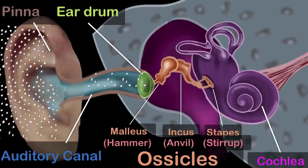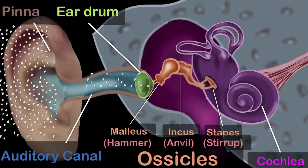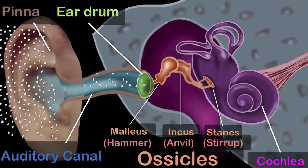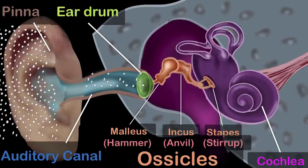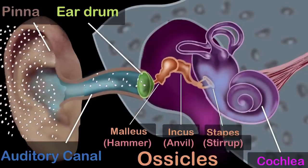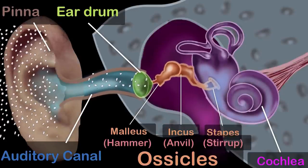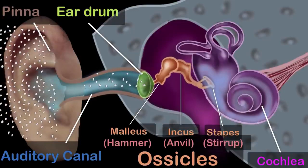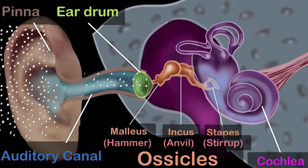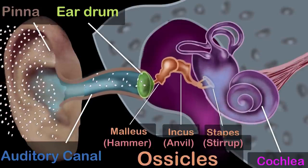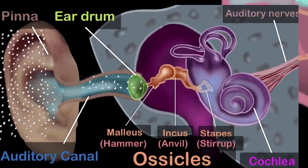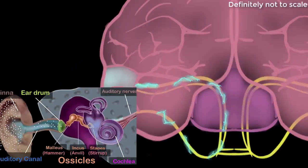Now the cochlea is super complex, and it's also a little mysterious — even today there are certain things about it we just don't know. As mentioned earlier, it contains a liquid, and when the stirrup hits our cochlea, this liquid starts vibrating. Then there are some specialized cells in the cochlea that convert these vibrations into electrical signals, and these electrical signals go through the auditory nerves all the way to your brain, where they get interpreted as sound.